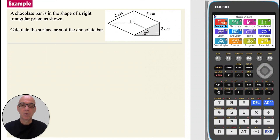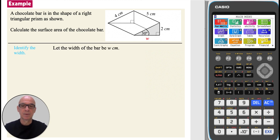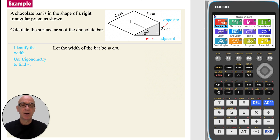In this question, we're asked to calculate the surface area of the chocolate bar, which is in the shape of a right triangular prism, as shown. We begin by identifying the width, letting the width of the bar be W centimetres. We can use trigonometry to find W. Two centimetres is the opposite length, opposite the 30-degree angle, and W is the adjacent length.